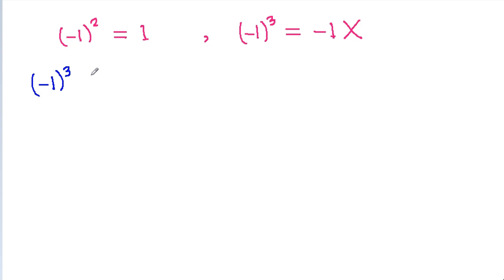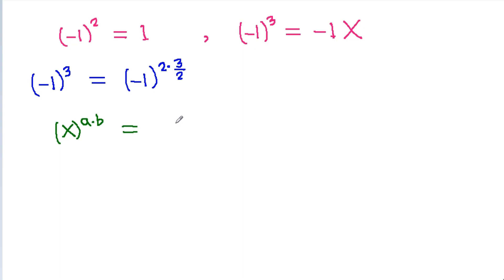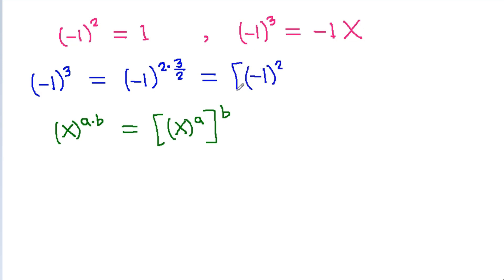Minus 1 power 3 is equal to minus 1 power 2 times 3 by 2. And x power a times b is equal to x power a, whole power b. So it will be equal to minus 1 power 2, whole power 3 by 2. And minus 1 power 2 is 1, power 3 by 2, that is equal to 1.